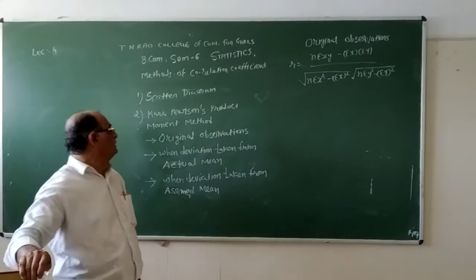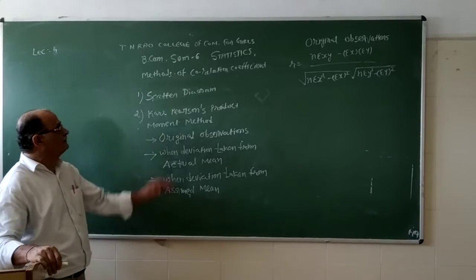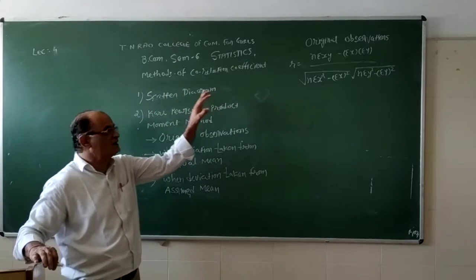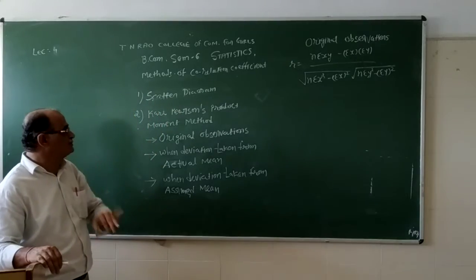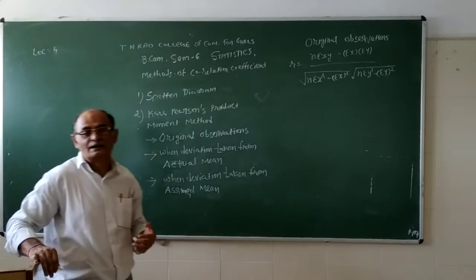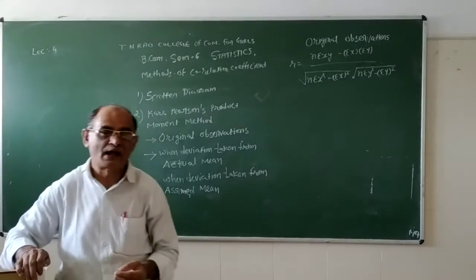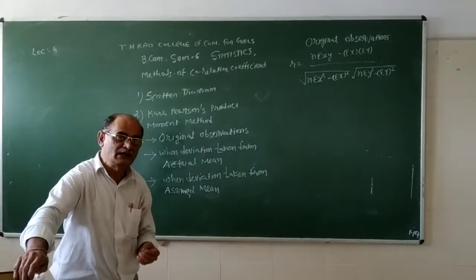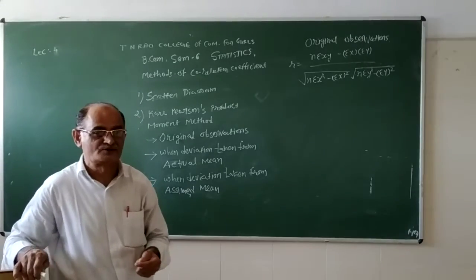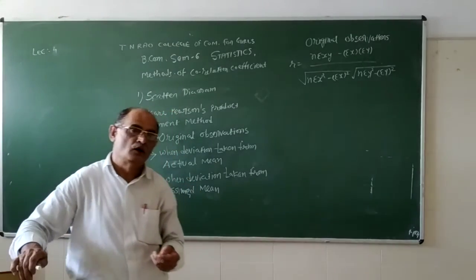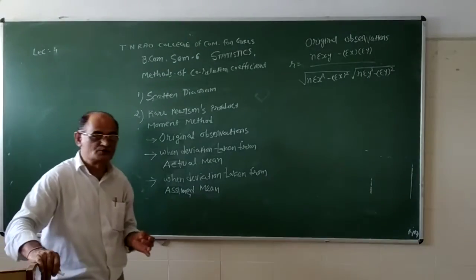Good morning. In a previous lecture, we discussed the method of orientation using the scatter diagram. However, due to some limitations of the scatter diagram, we can find only whether the value is plus one, minus one, or somewhere between zero to one or minus one to zero — the exact value is not possible to find.